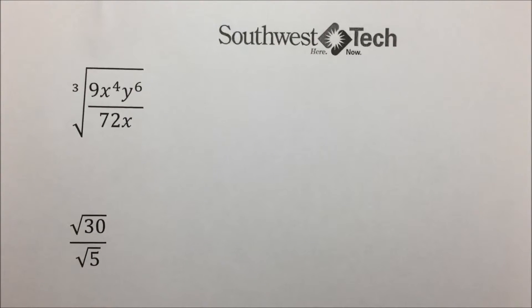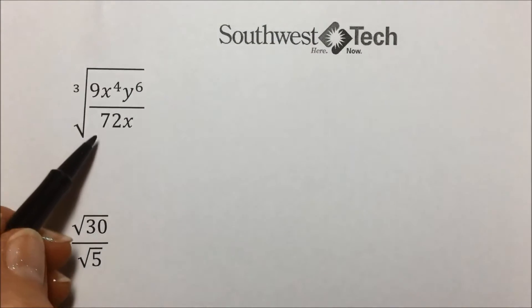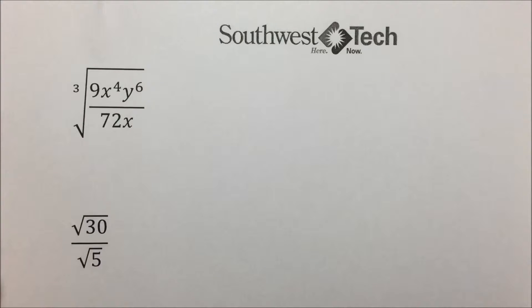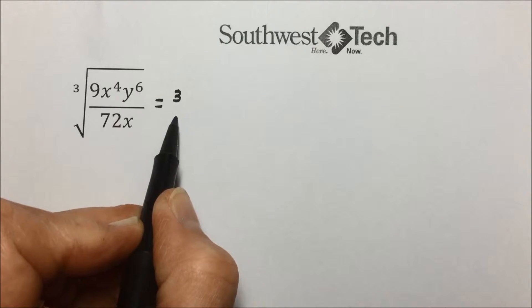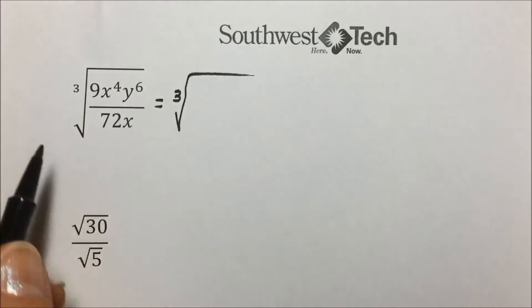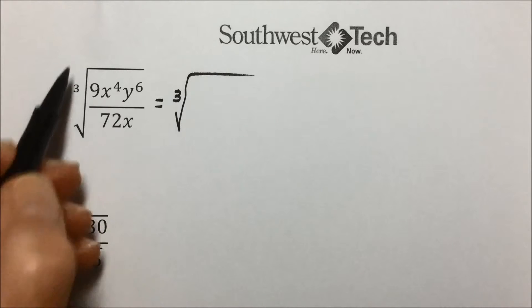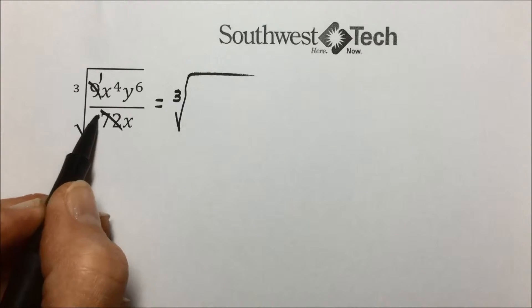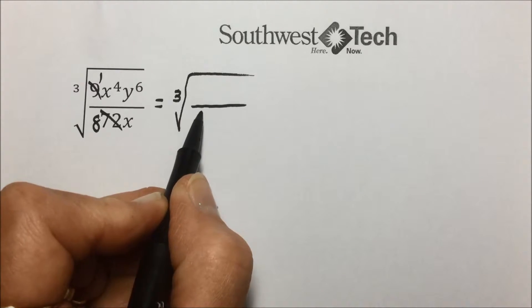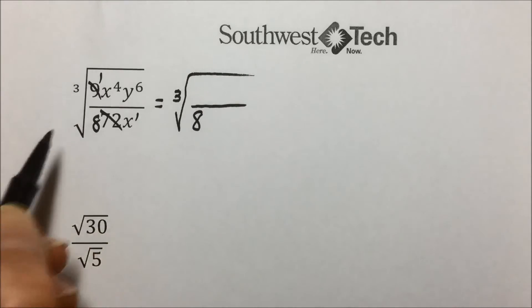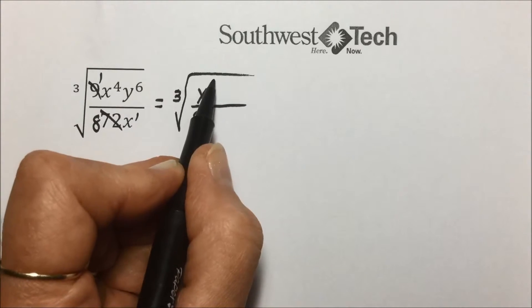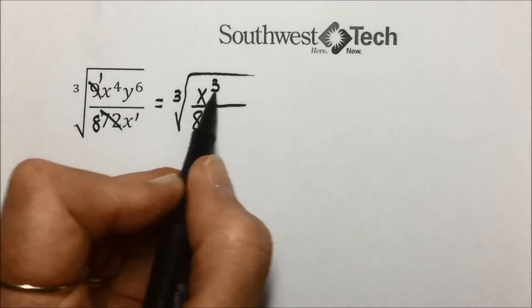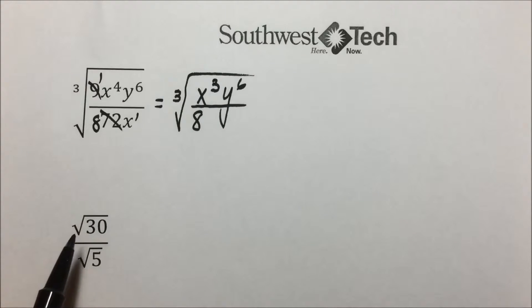In the next example, we have a cube root. If you can simplify ahead of time before breaking it into a quotient of radicals, that makes life easier. We take the cube root of 9 over 72 — there's a common factor of 9, which leaves 8 in the denominator. We also have common bases of x in a quotient, so we subtract exponents, leaving x to the 4 minus 1, or 3rd power in the numerator, and y to the 6th power is unchanged.